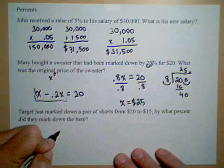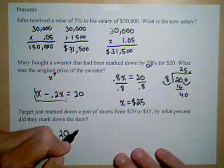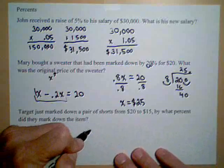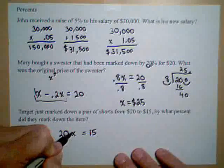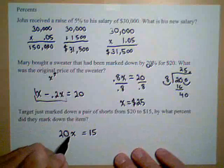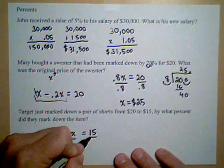This time we know the original price, but we need to find what percent of 20 is 15. So X will be what percent of 20 is 15. So we divide both sides by 20.